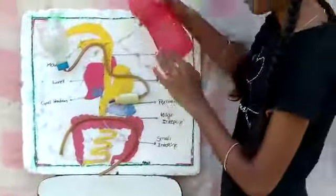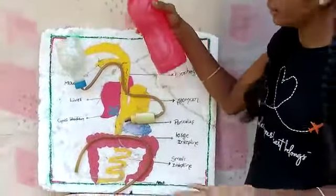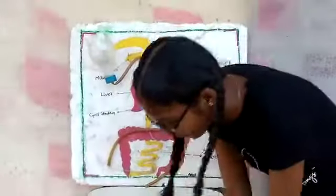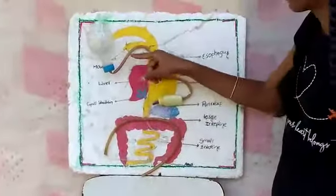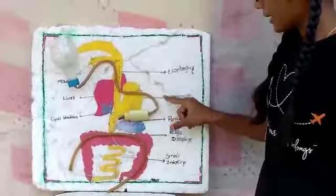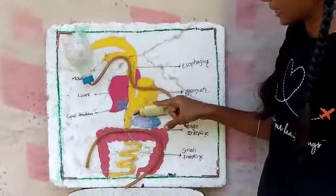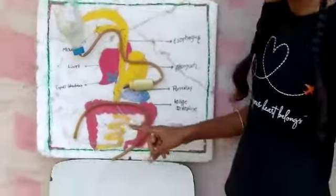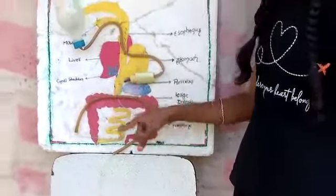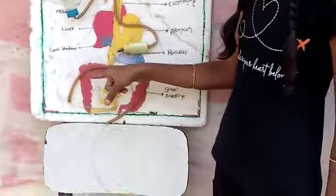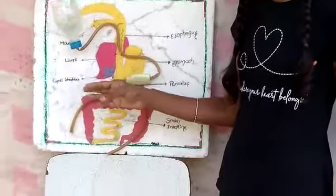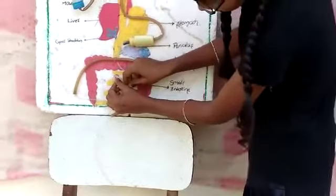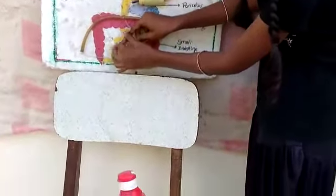When we pour water — meaning when we take food — it goes to the esophagus, then to the stomach where it is digested, then comes out to the small intestine where nutrients are absorbed. Next, it goes to the large intestine where salts and water are absorbed, and then the remaining food will come out like this through the anus.